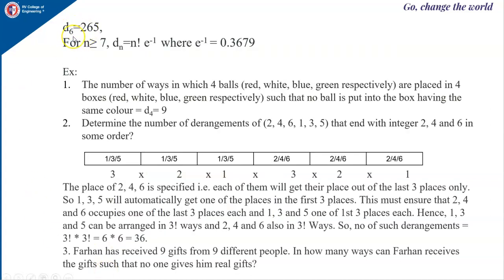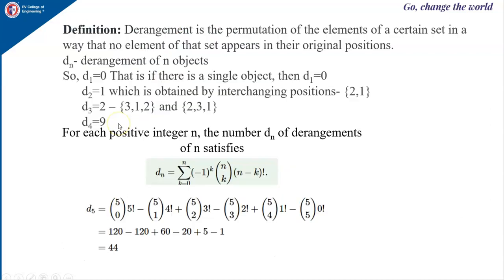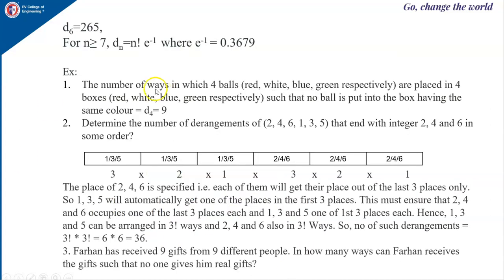Similarly, if you compute d6 using the formula, you will get 265. Now for n greater than or equal to 7, you can use the approximation dn equals n factorial times e^(−1), where e^(−1) is equal to 0.3679.